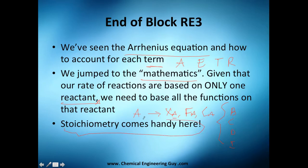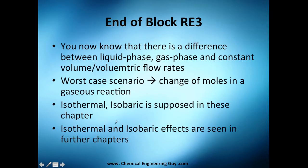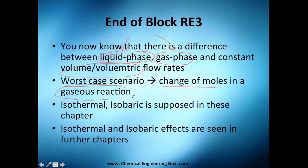That's why stoichiometry comes very handy here. Probably you are bored of all the equations, but you will use them in the next chapter, so I did this special section for you. You now know there is a difference between the liquid phase and a gas phase because of the volumetric flow — constant volume — so hopefully you always get liquid phases because these are easier to model than gas phase. Worst case scenario: a change of moles in a gaseous reaction, where one mole transforms into two moles.